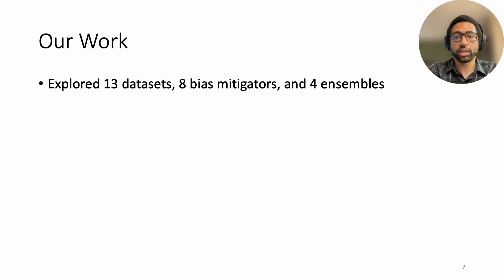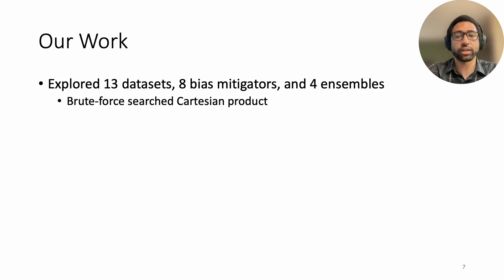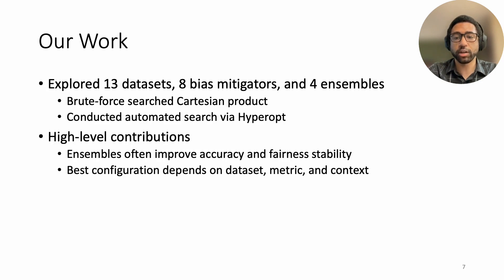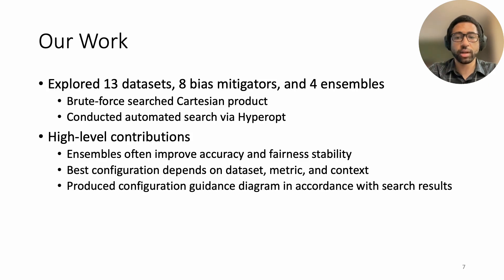In our work, we used 13 datasets, eight bias mitigators, and four ensembles to explore combinations of mitigation and ensemble learning. Specifically, we conducted two searches: a brute-force grid search of the Cartesian product of possible configurations, and an automated search via hyperopt. Overall, we find that ensembles often improve accuracy and fairness stability, but the best configuration depends on factors including but not limited to the dataset, metric of interest, and surrounding context. In light of our findings, we also produced a model configuration guidance diagram in accordance with our results to suggest best practices to future practitioners.